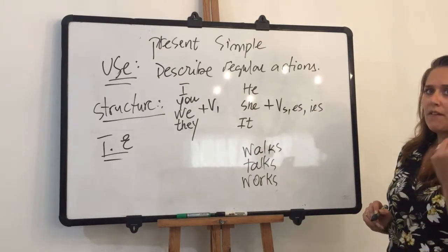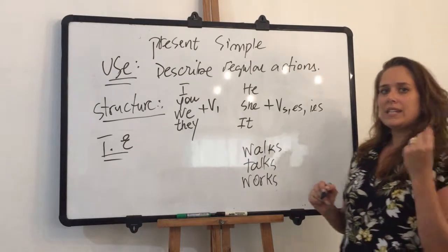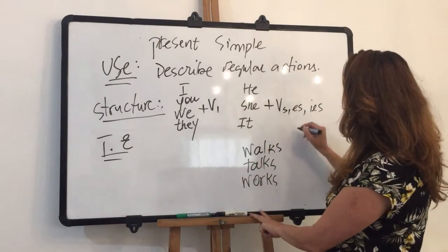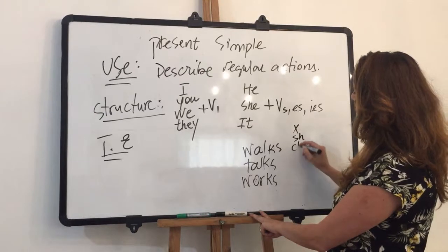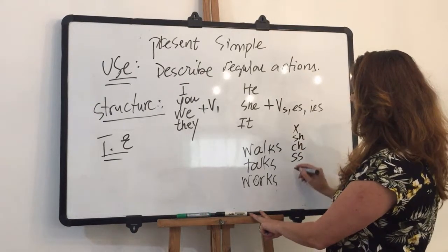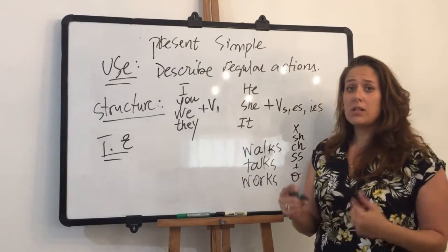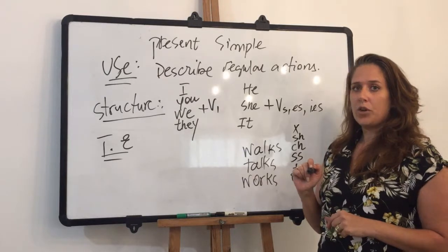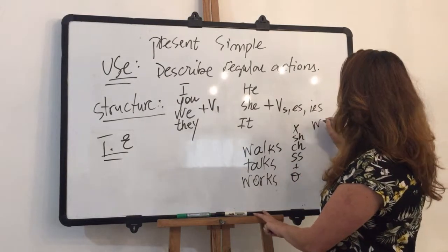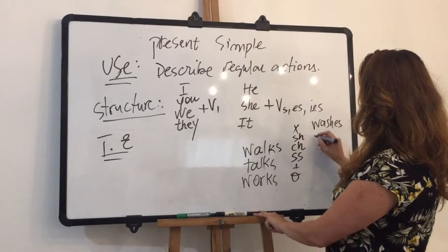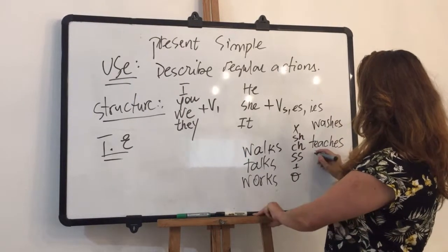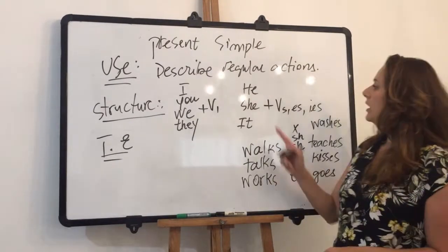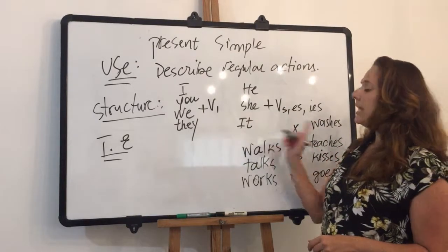If I have a verb that ends with a whistling sound — X, SH, CH, SS — and also O, which is not a whistling sound but is part of this group — I have to add ES to the end of the verb. So it looks like: washes, teaches, kisses, goes. He goes, she teaches, it washes.